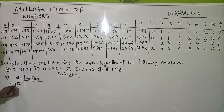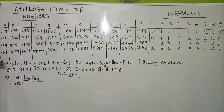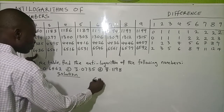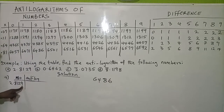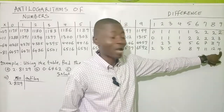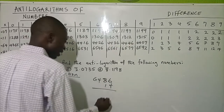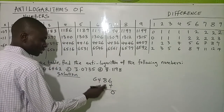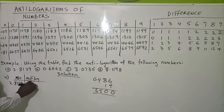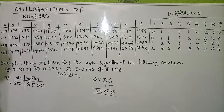So we read the table as: 81 under 2, difference 9. Looking at the table, 0.81 under 2 gives us 6480. Then for difference 9 you trace down to the difference column and we get 14. Adding 14 to 6480: 6480 + 14 = 6494, which we round to 6500. But that is not our final answer.